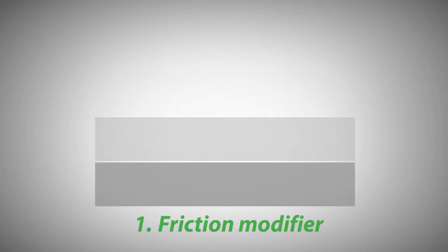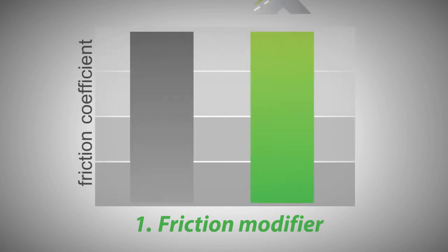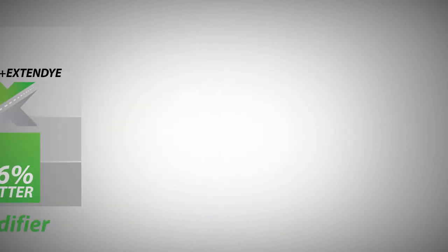First, a friction modifier increases lubricity of the compressor oil, improving efficiency by over 50% and improving fuel economy.